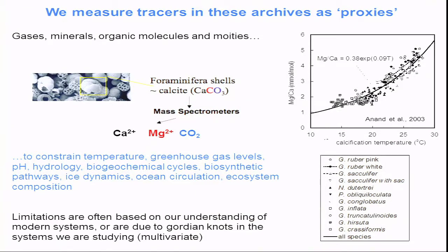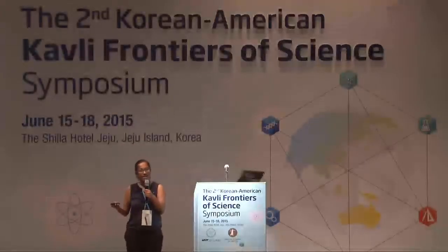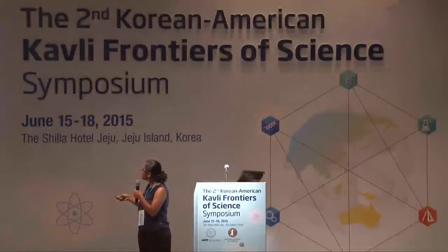Once we've actually recovered these samples, we can measure a whole range of tracers. The field of quantitative paleoclimatology has emerged in the last 20 or so years, facilitated by the development of technologies such as mass spectrometers that are high enough in precision to enable us to do some pretty cool science. We can look at gases, minerals, and organic compounds. In all of these cases, we look at different chemical variables to try to constrain various environmental or ecological variables that might be of interest. Our ability to infer ancient variability is really predicated on our understanding of the modern.